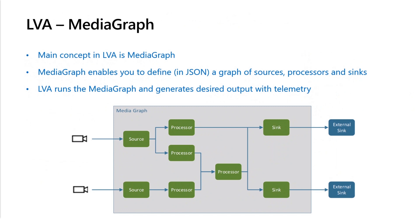A media graph is basically a graph that you specify in JSON, and it contains source, processor, and sink nodes. Once you give the media graph definition to the IoT Edge module, it runs it and generates the desired output, and it continues to operate 24/7. You don't have to worry about the internal details, so you get robustness and reliability without worrying about them. We will look at that in more detail as I get into the demo.